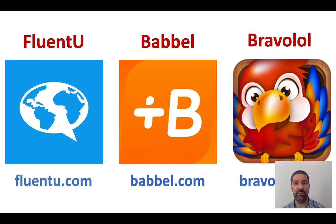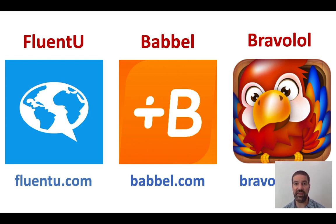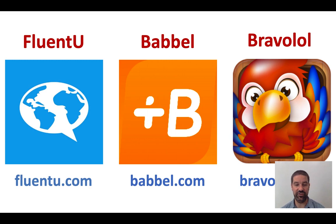Bravoli is another one of my favourites, and you'll notice from the parrot icon that it places a huge emphasis on speaking. If we're learning a modern language — particularly to go on holiday — it's the speaking part which is most important, yet it tends to be the bit we don't practice enough in schools, where we often focus on reading and writing skills. So Bravoli is all about speaking, and it's available in 18 different languages.